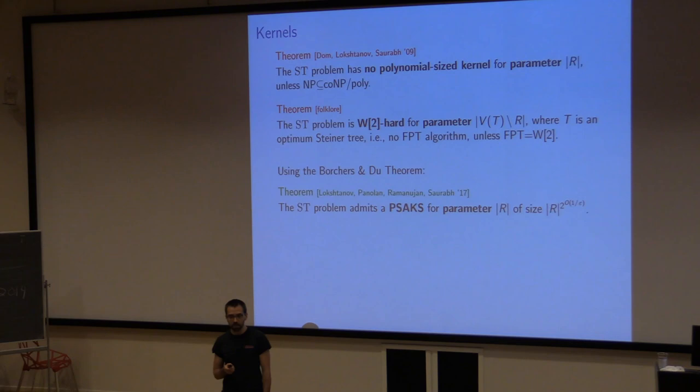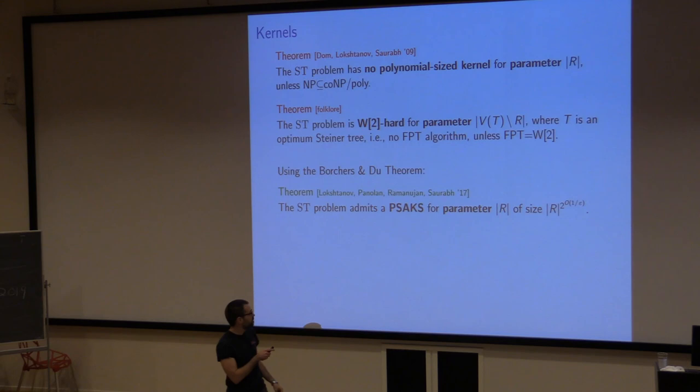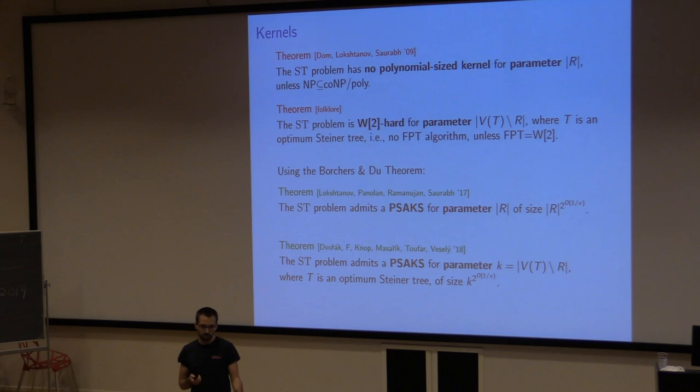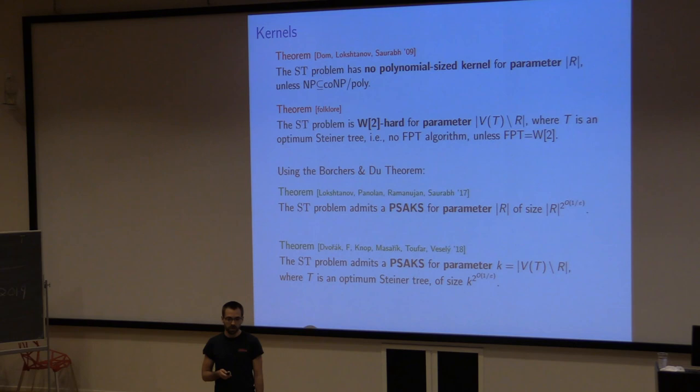As already observed in the lossy kernels paper, the Borchers-Du theorem leads to a PSAKS for the parameter number of terminals, of a certain size. In work done in Prague, we showed that for the other parameter — the number of Steiner vertices in the optimum — essentially the same tool also leads to a PSAKS. I want to show you a bit about this second result.